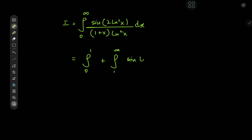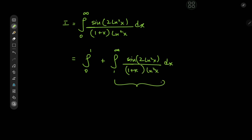So we have sine log squared x times two, divided by one plus x times log squared x dx. And for the sine rule, we apply the transformation going from the x realm to the one-over-x realm, which takes dx to the negative one over x squared dx.